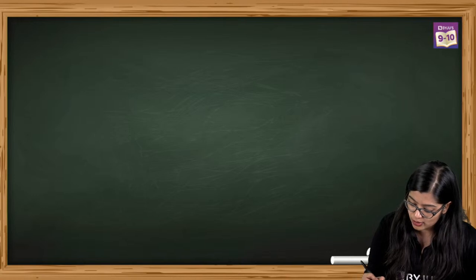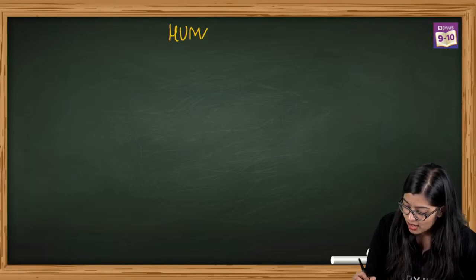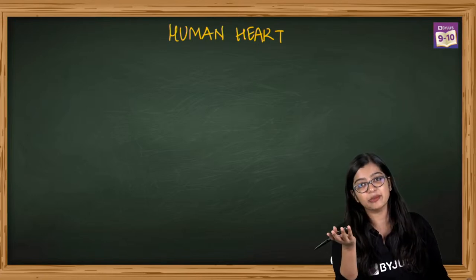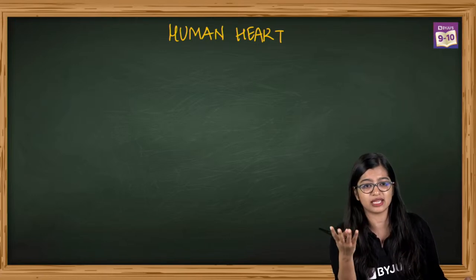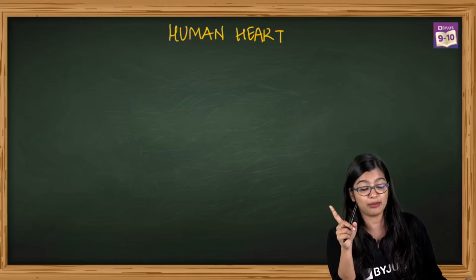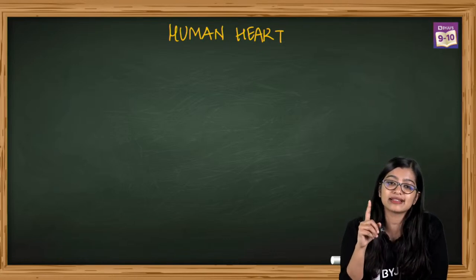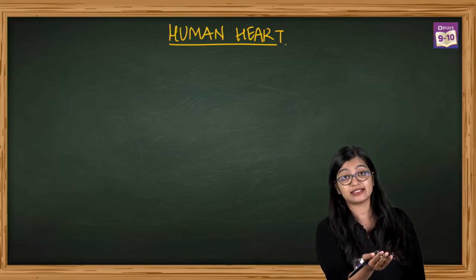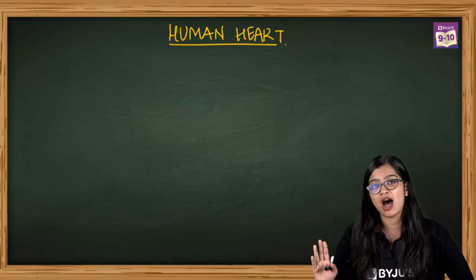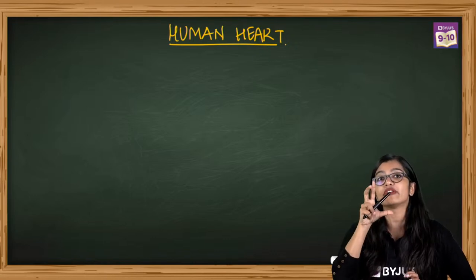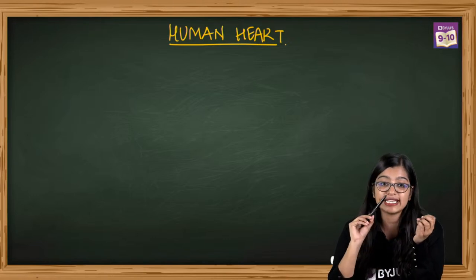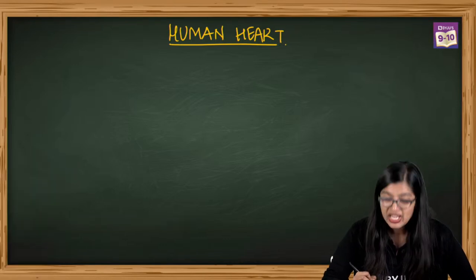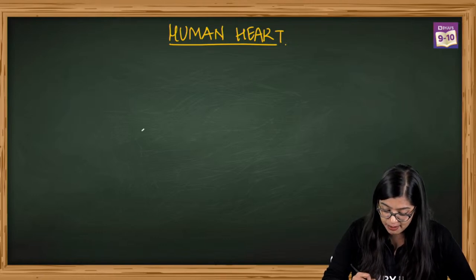For those worried about the human heart - here is a disclaimer. Chances of them asking you to draw the whole heart are very slim. A lot of the time, they ask you for labeling or diagram-based questions rather than full drawing. But I will help you draw it. The basic structure has four chambers and valves. The valves are very important. When drawing, the first thing to do is draw the basic ventricles.